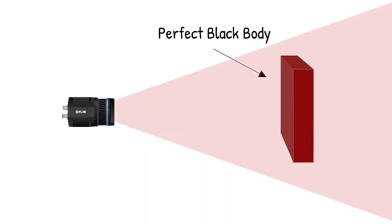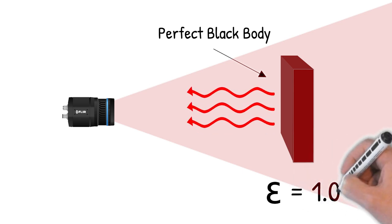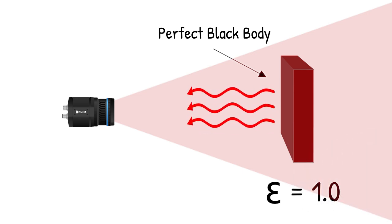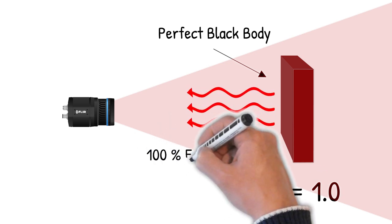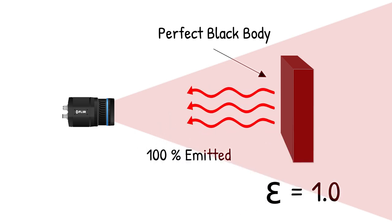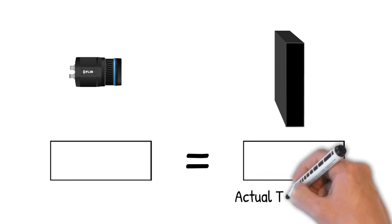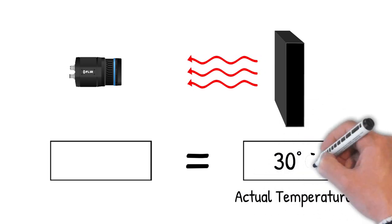Thus, the emissivity of our target is 1, or in other words, the infrared radiation from the target is 100% emitted from the target surface. The actual temperature is the temperature of the target of interest.